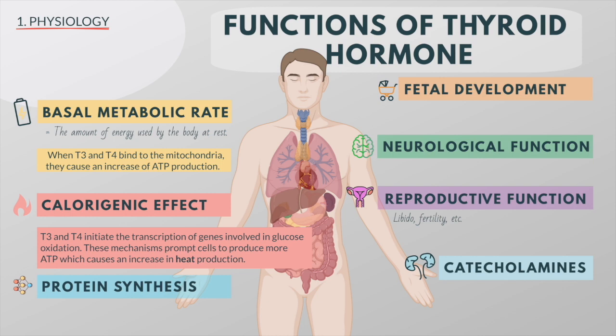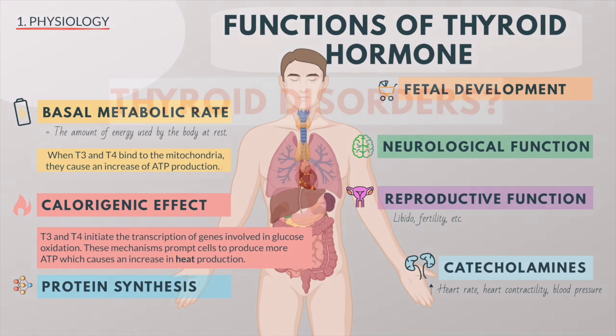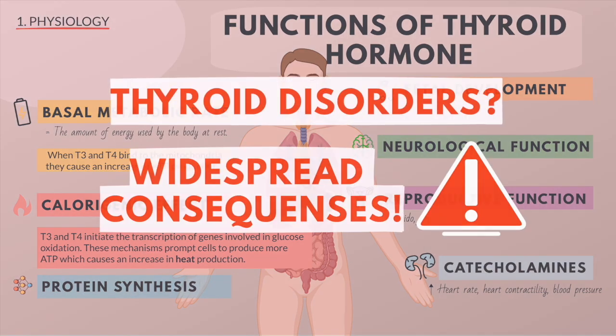When levels of T3 and T4 are excessive, this effect accelerates the heart rate, strengthens heart contractility, and increases blood pressure. Because thyroid hormones regulate metabolism, heat production, protein synthesis, and many other body functions, thyroid disorders can have severe and widespread consequences. What these consequences are will be discussed in the next two videos.